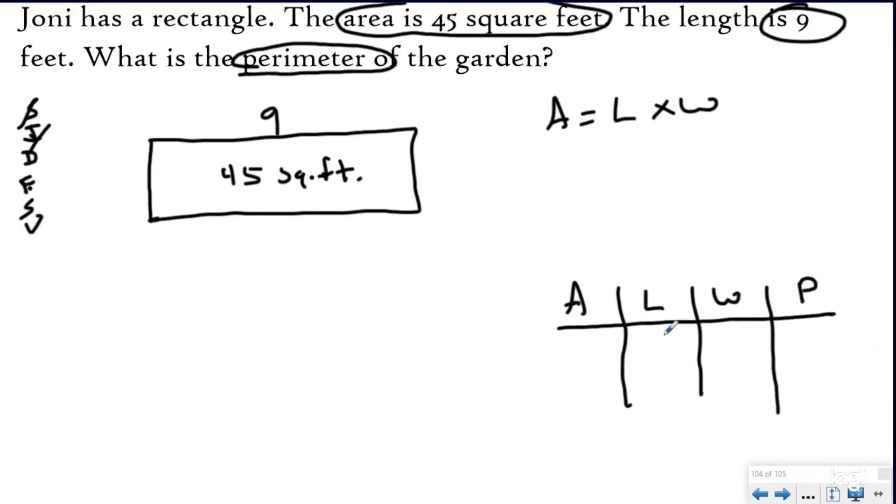I'm also going to combine our chart that we've been using for finding the dimensions in the area. The good news is I don't need to find out all my factors of 45 and write them all out. All I need to do is use my area formula to help me find my missing dimension. I know the length was nine. So if I have my area formula, I have 45 equals nine times something. I'm going to view this as a multiplication equation and use my fact family knowledge. 45 divided by nine is going to be five, which means my missing factor is five, which means my width has to be five feet.